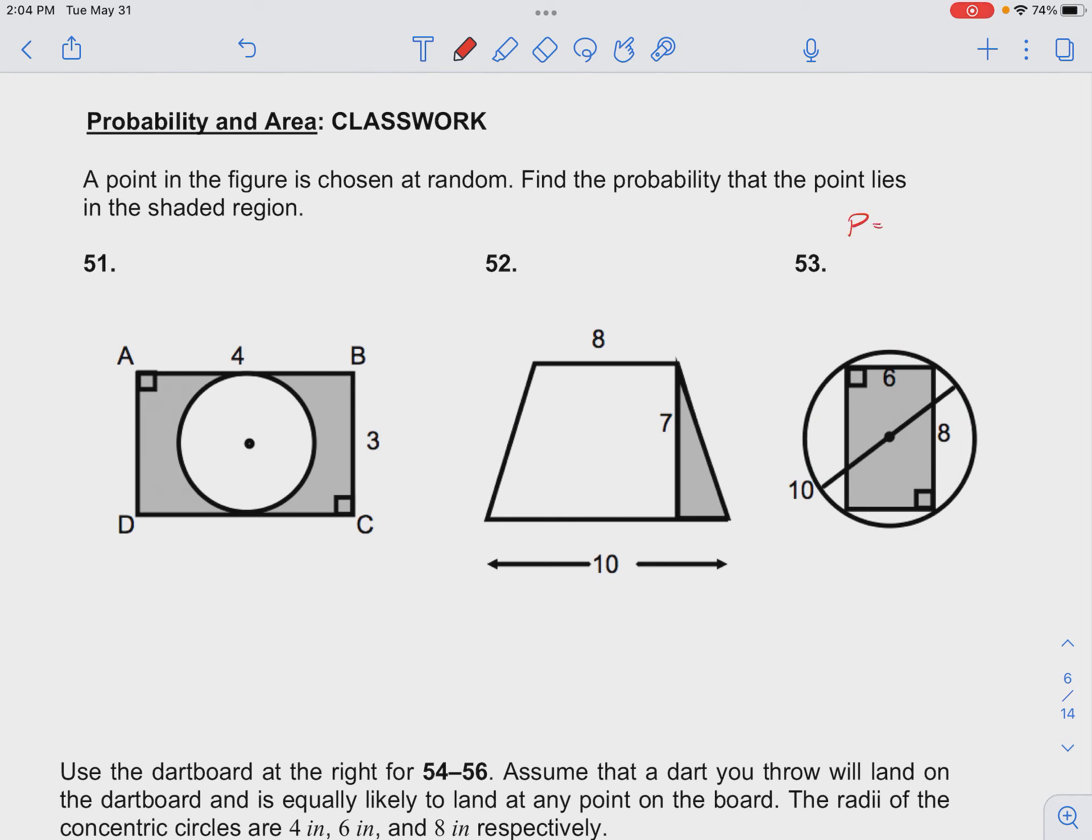Our probability is given by the area of the shaded region over the area of the total figure. So that would be the favorable outcome over the total possible outcome.